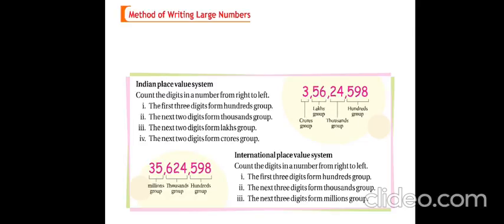The second place value system is the international place value system. Counting digits from right to left, the last three digits represent the hundreds group — ones, tens, and hundreds. The next three digits represent the thousands group. Then one million, ten million, and hundred million. So the international place value system has: ones, tens, hundred, one thousand, ten thousand, hundred thousand, one million, ten million, and hundred million.